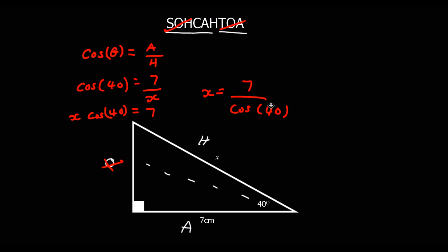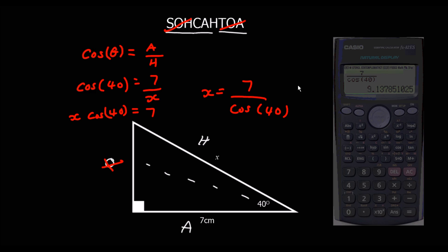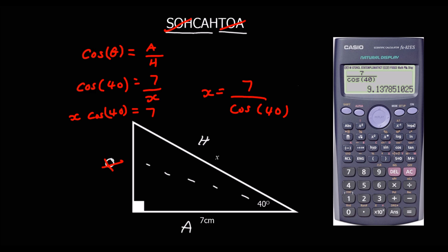We write 7 ÷ cos 40 in the calculator and give the answer to two decimal places. X is equal to 9.14 cm.